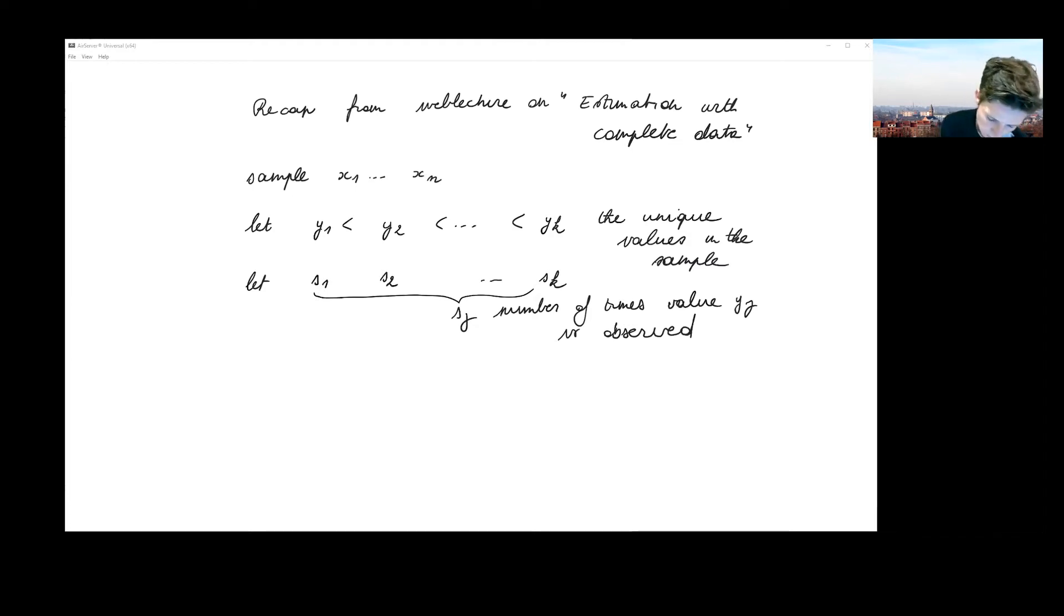If you put all those SJ's together, if you take the sum of all those SJ's, then you're back with the total number of observations which you have observed in your sample. And that was N. My sample size is equal to N.